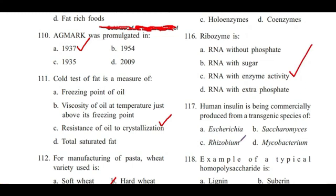Question 117: Human insulin is being commercially produced from a transgenic species of — Escherichia, Saccharomyces, Rhizobium, or Mycobacterium? Answer is A, Saccharomyces.